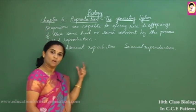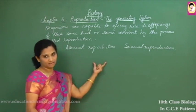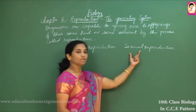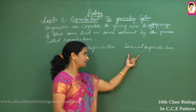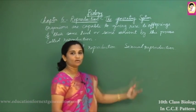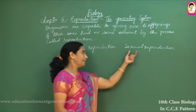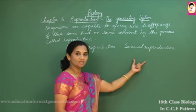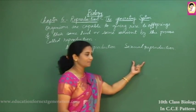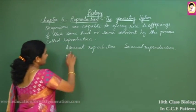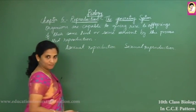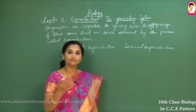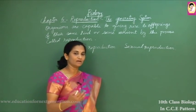What is the difference between sexual and asexual mode of reproduction? In asexual reproduction, only one organism takes part in producing offspring. In sexual reproduction, two organisms — with male gamete and female gamete — undergo fertilization and produce offspring.